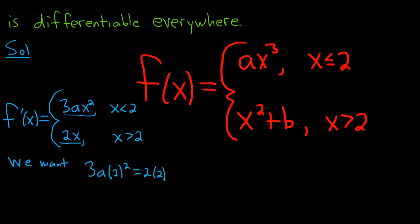We want this to be equal to f prime of 2. We're trying to create differentiability here for this function. We want the derivative to be this. So this is 4 times 3, so this is 12a. And 2 times 2 is 4, so this is 4.